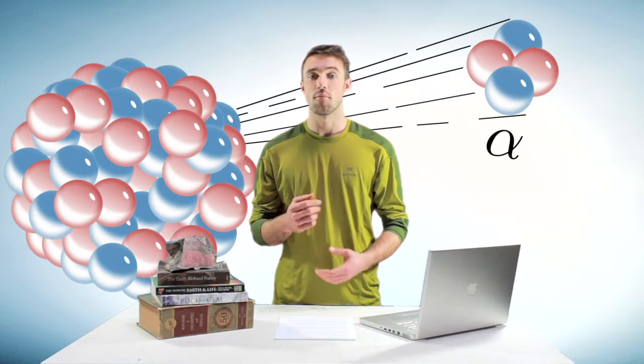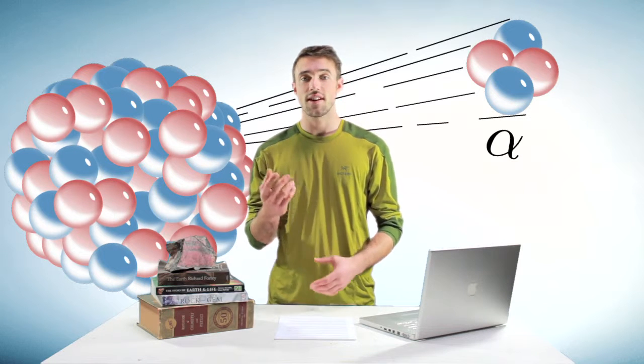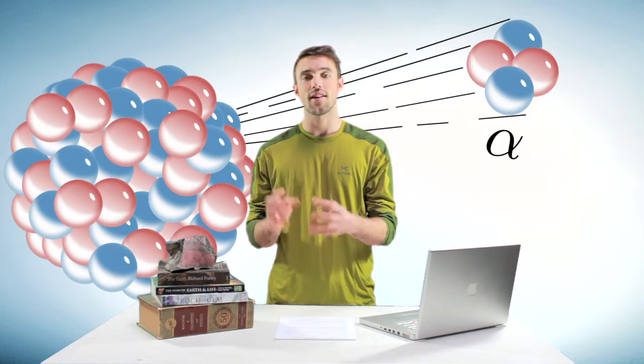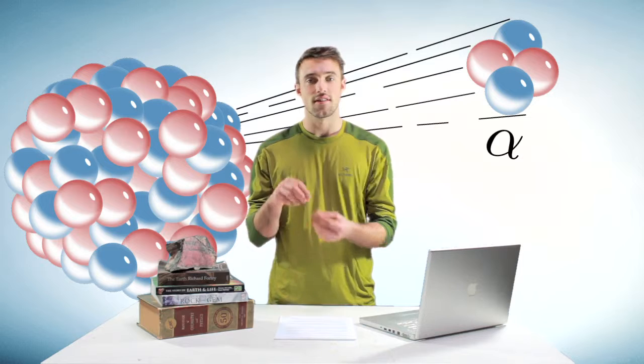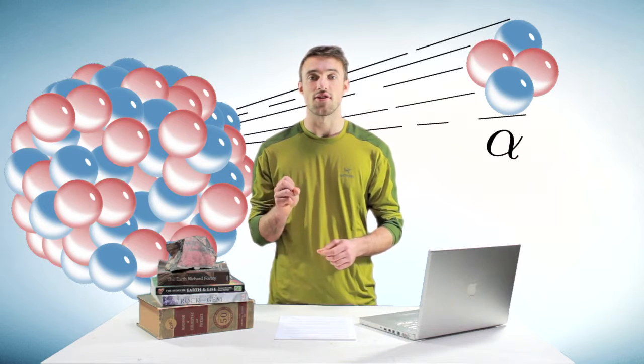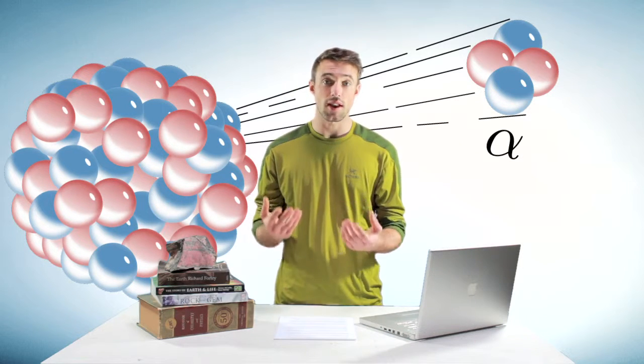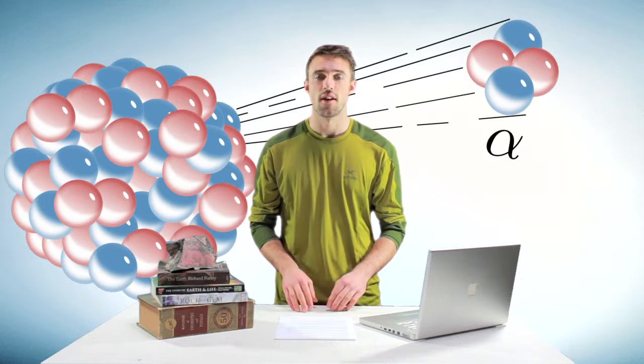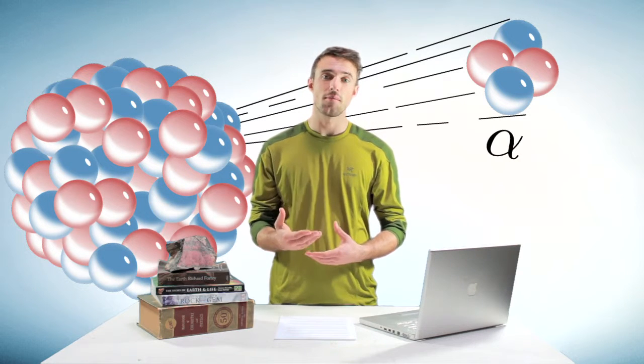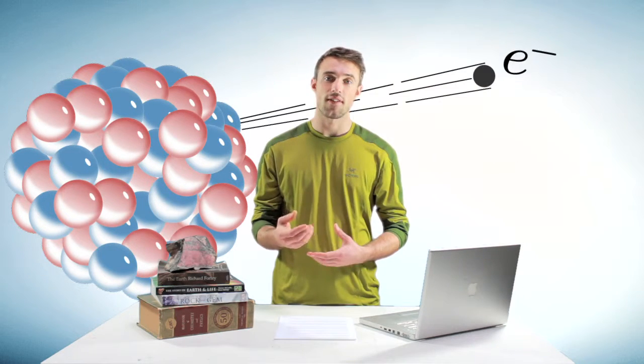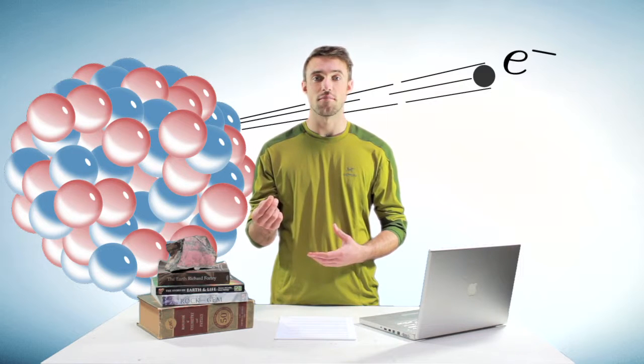If you remember from Rutherford's studies, that's a helium nucleus, because if you add electrons to this nucleus of two protons and two neutrons, you get helium, the element. Another type of decay is beta decay, and that's simply an electron being emitted.